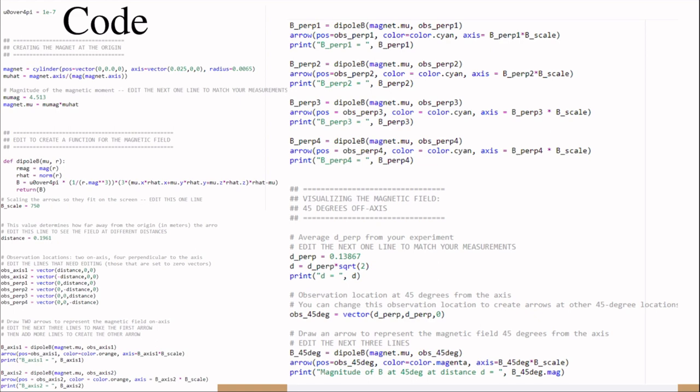In the code, you can see I defined some of the constants that I'll be using later. Next, I defined a function that would take in values mu and r and output the magnetic field magnitude. Then I placed some arrows that will be shown in the visual model in the next slide.